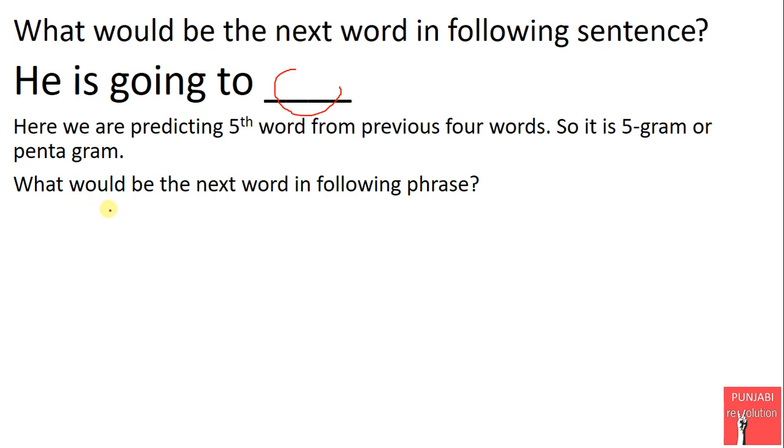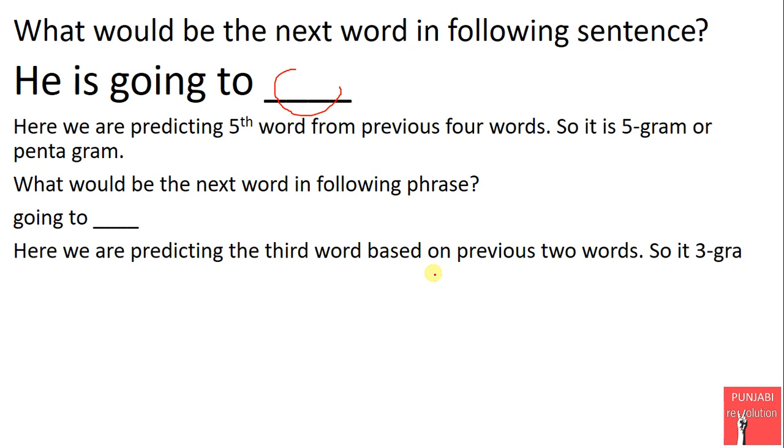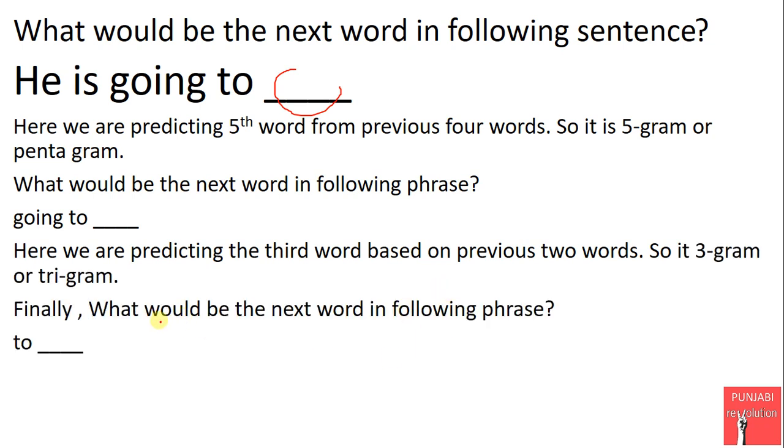Let's see this example. In the following phrase 'going to blank', we are predicting the third word from previous two words, so it is called a trigram or three-gram. Similarly, what would be the next word in the following phrase 'to blank'? Here we are predicting the second word from the previous one word, so it is called a bigram or two-gram.